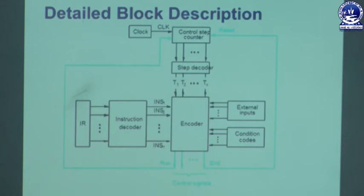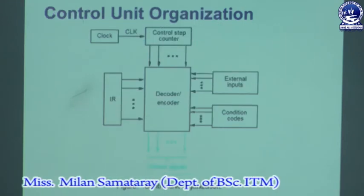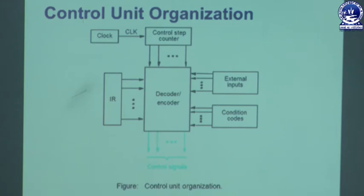This is needed whenever the MFC signal is issued to cause the processor to wait for the reply from the memory — at that point the RUN control signal is set to 0. The control hardware discussed in these two diagrams can be viewed as a state machine that changes from one state to another in every clock cycle, depending on the content of the instruction register, the condition codes, and external inputs. This machine gives the output as the control signals, and the sequence of operations is determined by the logic elements — that is why this control unit is called hardware.